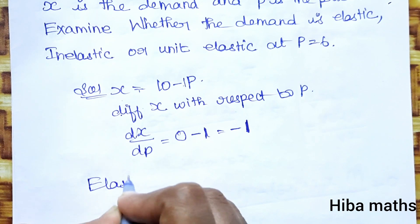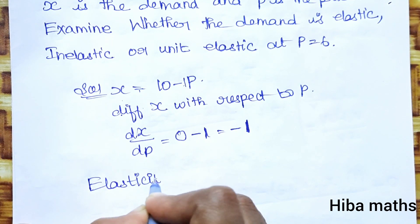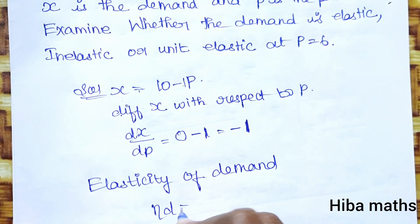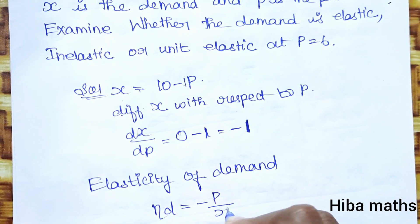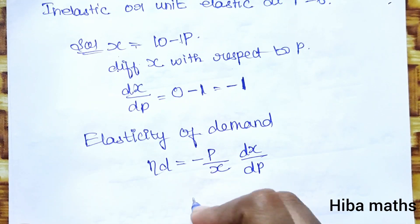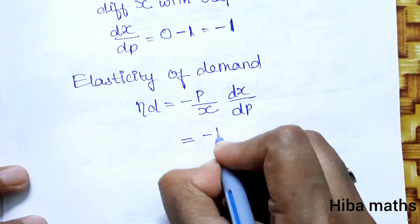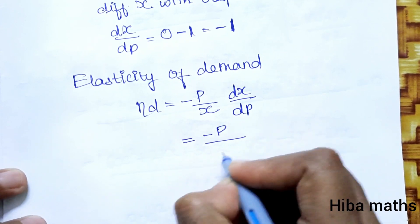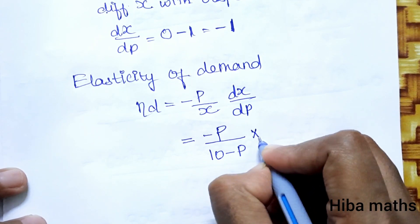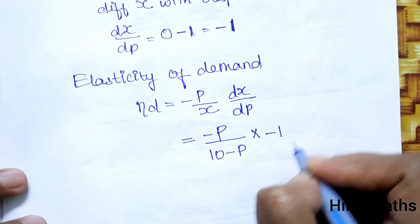The elasticity of demand formula is η_d = -P/X × dx/dP, which equals -P/X × (-1).